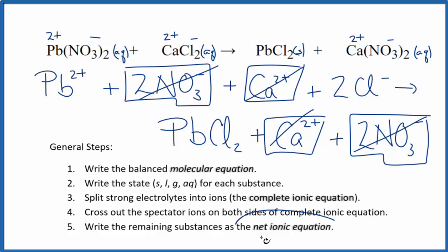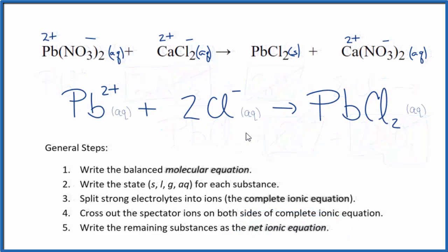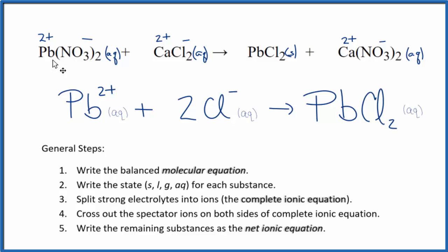What's left, that's the net ionic equation for Pb(NO3)2 plus CaCl2. I'll clean this up and write the states. We'll have our net ionic equation. So this is the balanced net ionic equation for lead(II) nitrate plus calcium chloride.